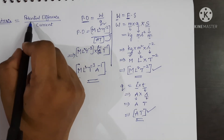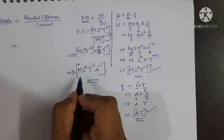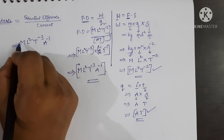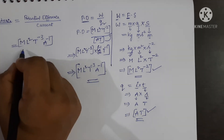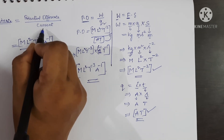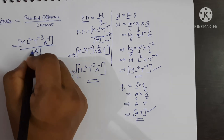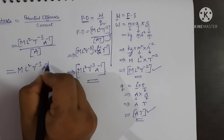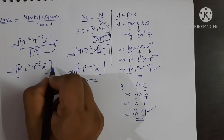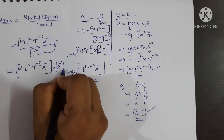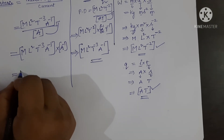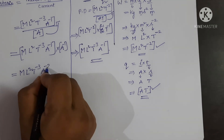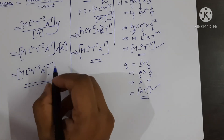Now substituting potential difference into resistance equals potential difference upon current. Potential difference is M L squared T power minus 3 A power minus 1, divided by current which is A. Bringing A to the numerator gives A power minus 1. So A power minus 1 combined with A power minus 1 gives A power minus 2. Therefore, the dimensional formula for resistance is M L squared T power minus 3 A power minus 2.